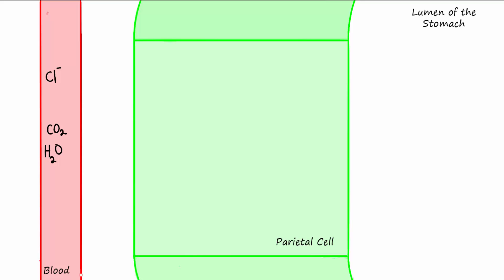Carbon dioxide, being hydrophobic, diffuses from the blood and crosses the basolateral membrane into the cytoplasm of the parietal cell. Water comes from the blood and enters the cell through aquaporin channels in the basolateral membrane.